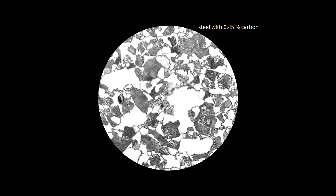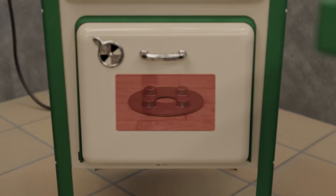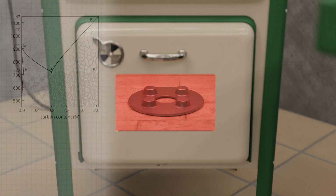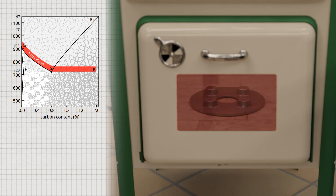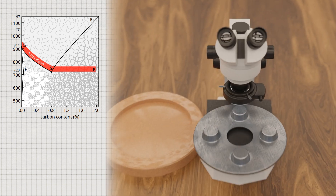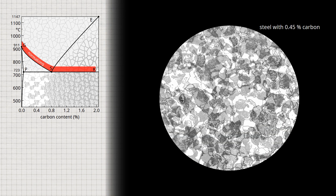It is therefore necessary to homogenize an inhomogeneous microstructure by means of a specific heat treatment. This gives the steel its normal properties, which can be reproduced at any time. The targeted homogenization of a steel microstructure is therefore also called normalizing. In normalizing, the steel is heated to just above the GSK line so that the pearlite is completely transformed into austenite. The austenitized steel is then slowly cooled in air. Since the grains are newly formed during the gamma-alpha transformation, grain refinement occurs, which gives the steel a homogeneous microstructure.